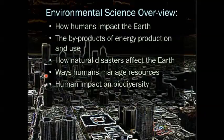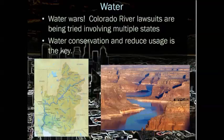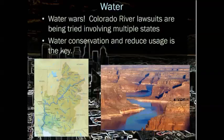In an overview of environmentalism, since we're talking about this being a mini-unit, we certainly don't have time to talk about everything that could possibly be environmental science. In fact, we have an entire year-long dual enrollment class if you're interested in these topics. For you guys, as an overview, we're going to look at just how humans impact the earth, the byproducts of how we produce and use energy, natural disasters that affect the earth, ways that humans should and do manage resources, and our impact on the overall diversity of our planet. We're going to talk about water usage and pollution, climate change, air pollution, over consumption and exploitation, and solid waste.